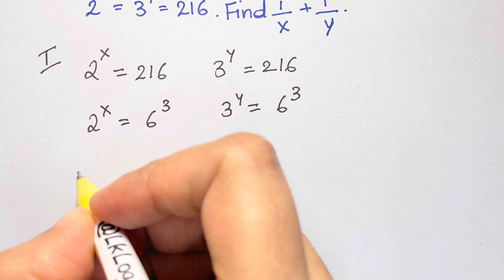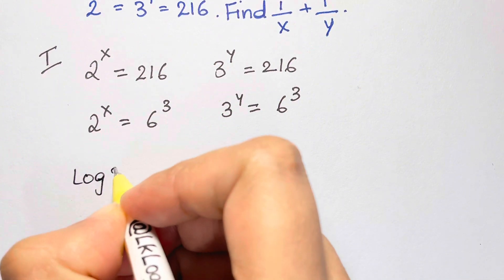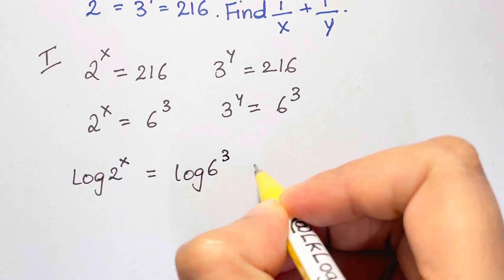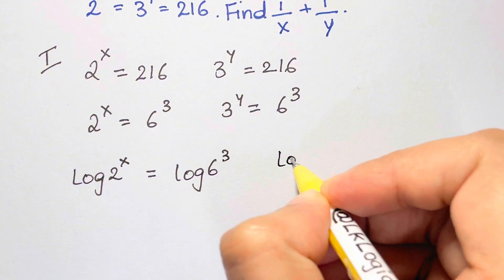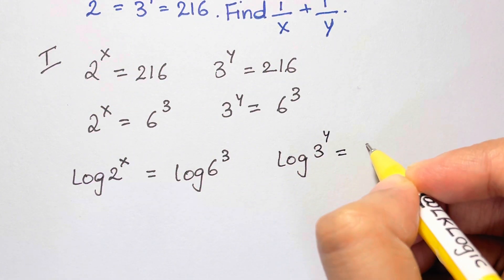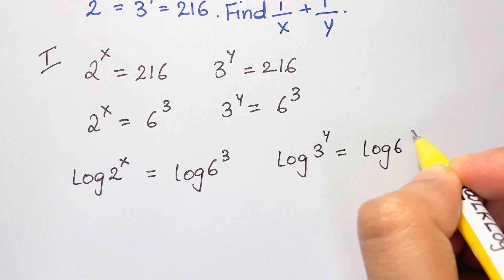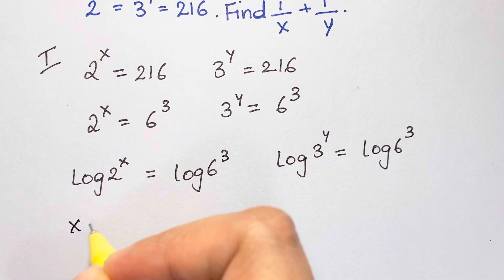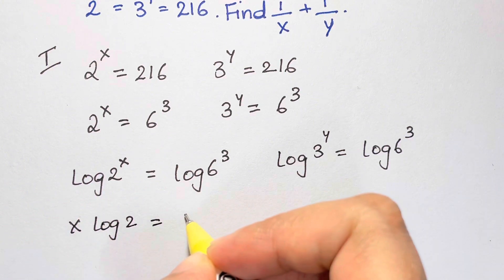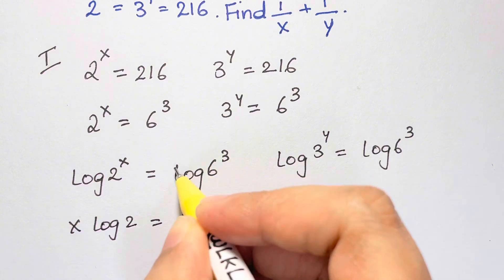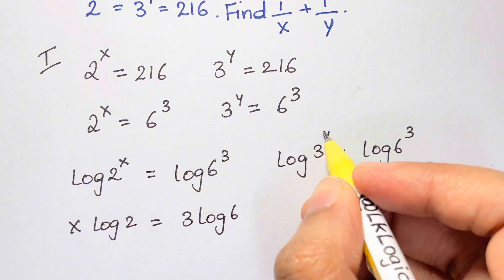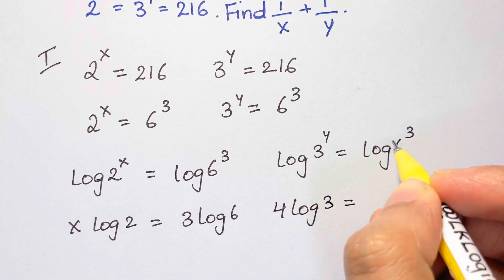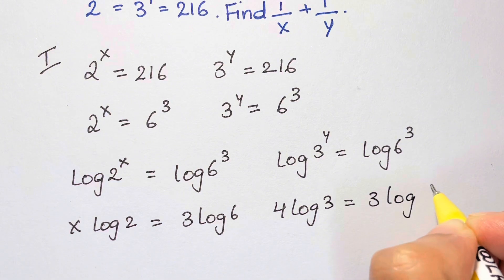Applying log on both sides, we get log of 2 to the power of x equals log of 6 cubed, and log of 3 to the power of y equals log of 6 cubed. Now bring the indices down: x log 2 equals 3 log 6, and y log 3 equals 3 log 6.